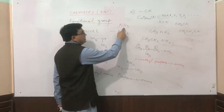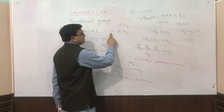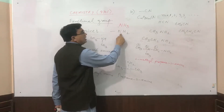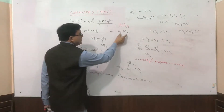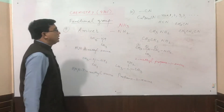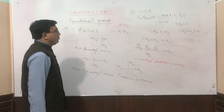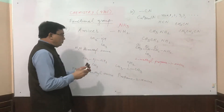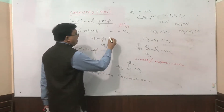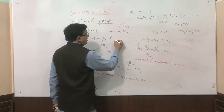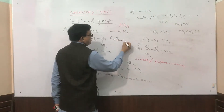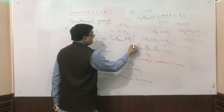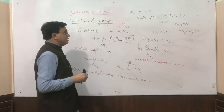The functional group of amines is represented as a vacant valency and NH2. This is the functional group of amines. The general formula for amines is CnH2n+1 and NH2. This is the general formula for amines.